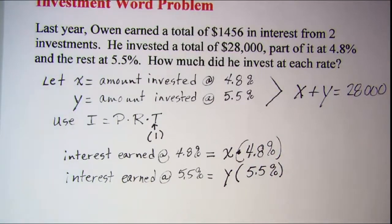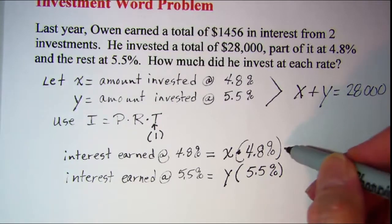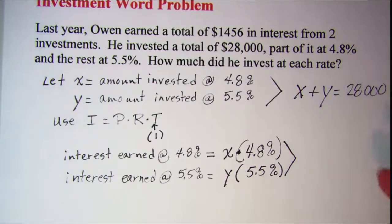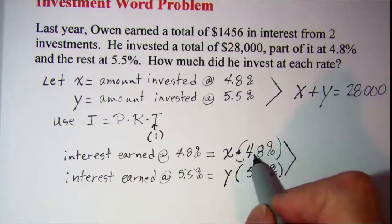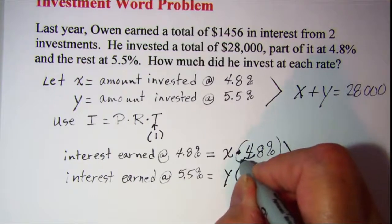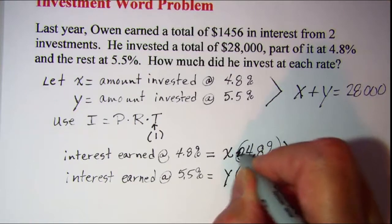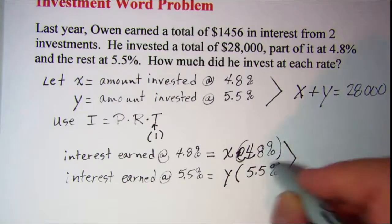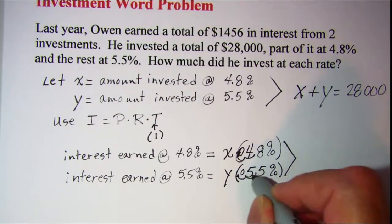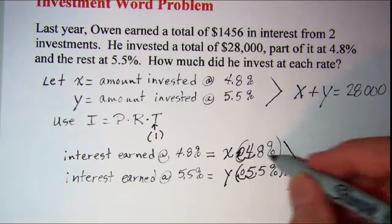And then we know that the two interests together, I can write this as 0.048 and I can write this one as 0.055.